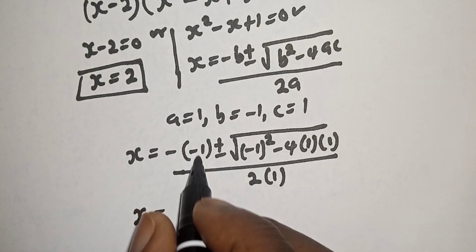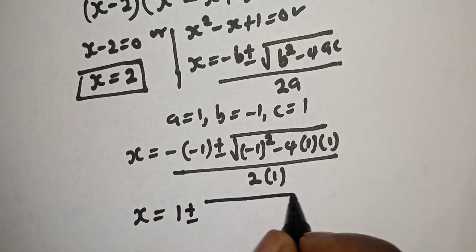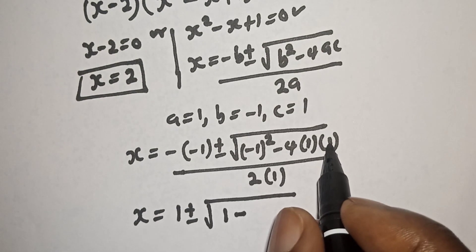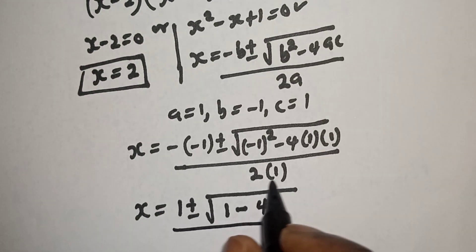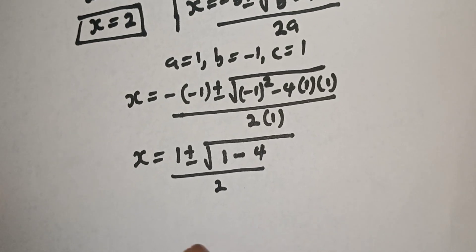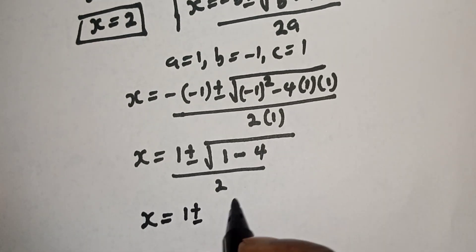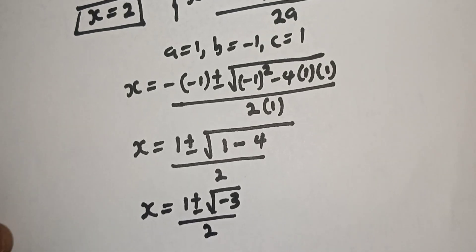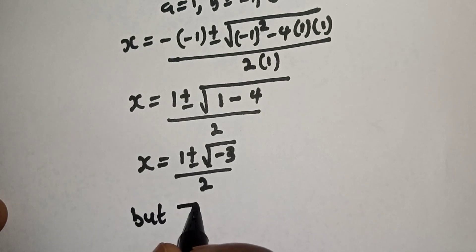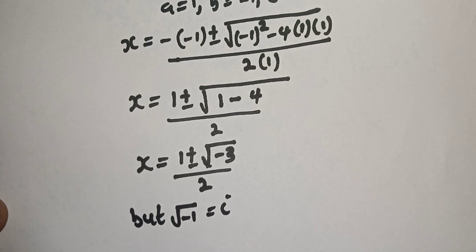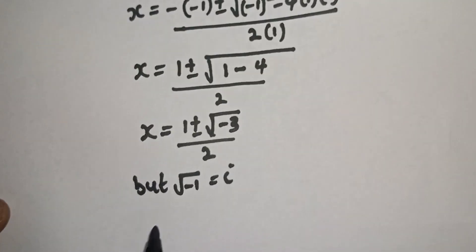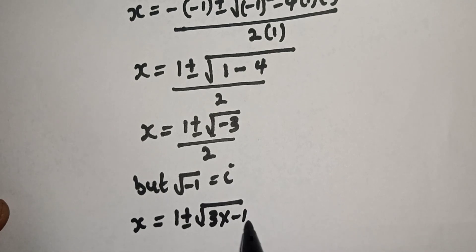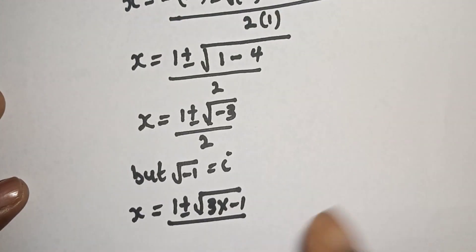S is equal to minus of minus 1, plus or minus square root of minus 1 squared minus 4 times 1 times 1, over 2 times 1. This gives S equals 1 plus or minus square root of 1 minus 4, which is square root of minus 3, over 2. Remember that square root of minus 1 is equal to i.